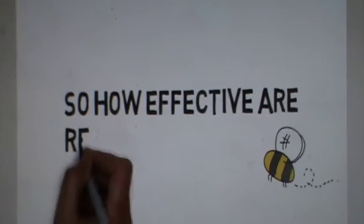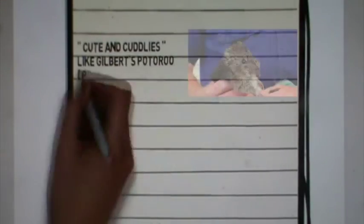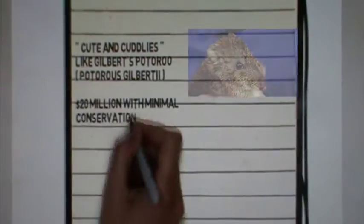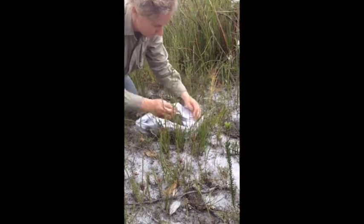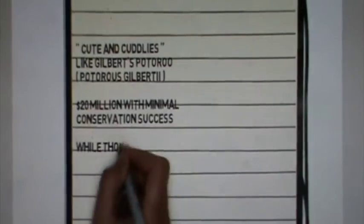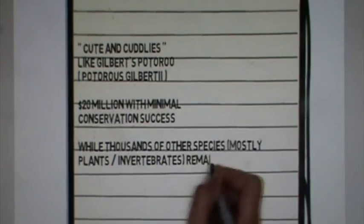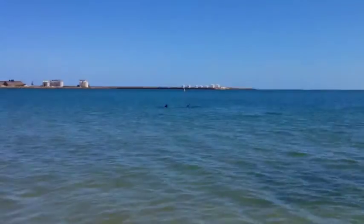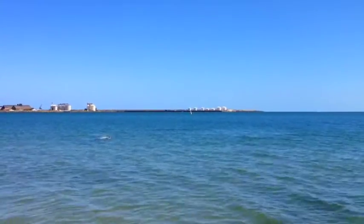So how effective are recovery plans? For example, the Gilbert's Potoroo recovery plan was unsuccessful due to an estimated cost of over $20 million with no change in conservation status. While thousands of other species, mostly plants and invertebrates, remain threatened and largely unknown with no funds allocated to their research or conservation.